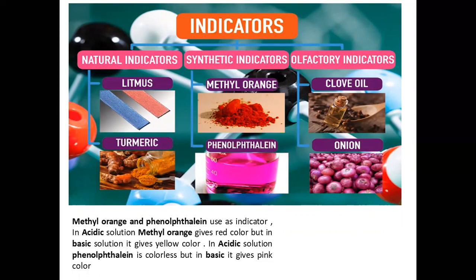The second natural indicator is turmeric. If we look at turmeric powder with acid, it will remain yellow. But when you process turmeric powder with base, it will turn red. So now you will know from natural indicators — that is nothing but litmus and turmeric.